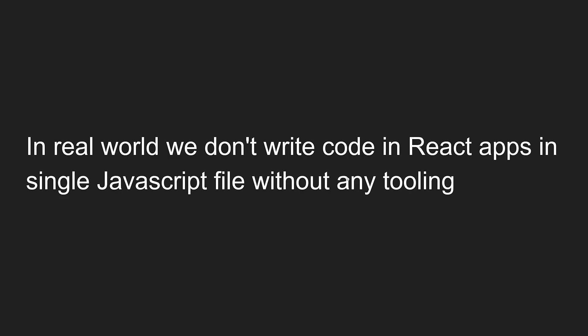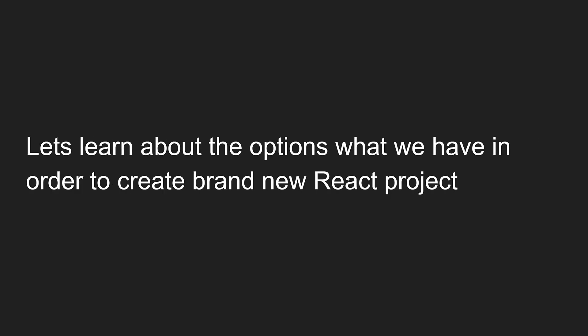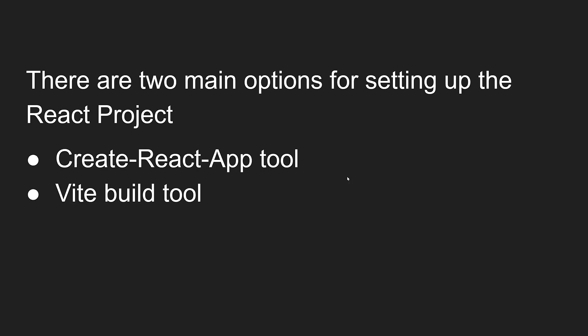In the real world, we don't write code in React apps in a single JavaScript file without any tooling. In our previous video, we recreated a simple React app in a single index.html file where we wrote all the HTML and React code. But in the real world it will not be like that. There are two main options for setting up a React project: one is the Create React App tool, and another one is the Vite build tool.